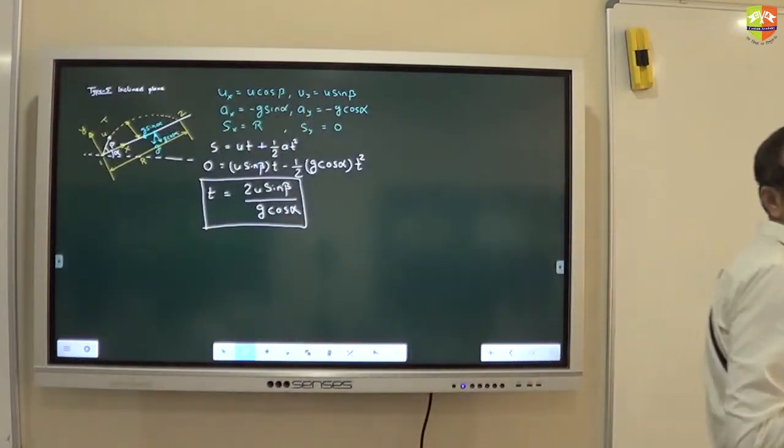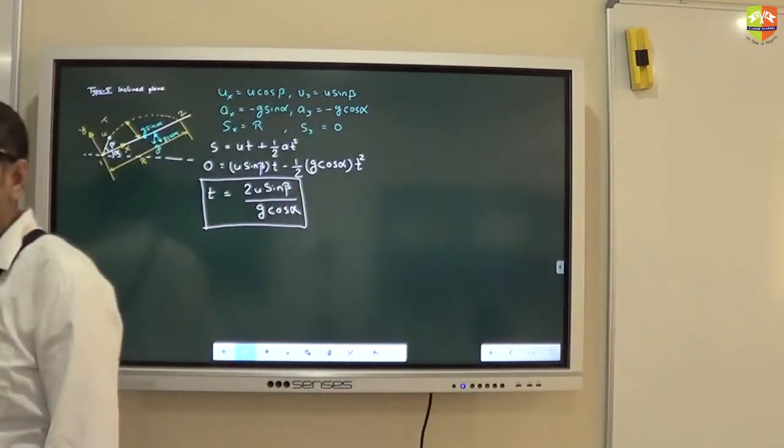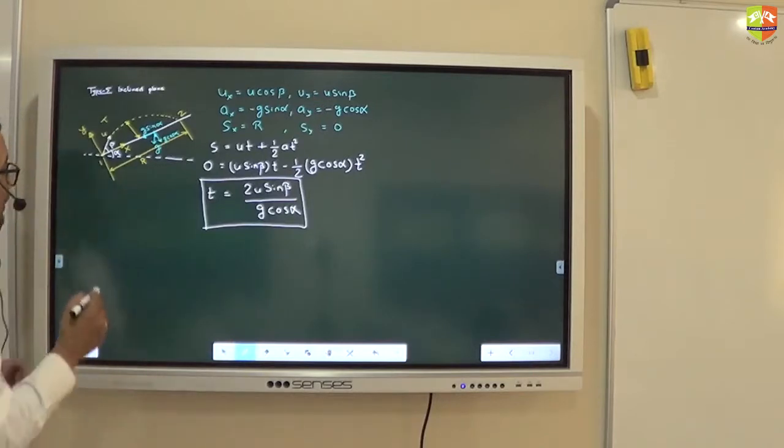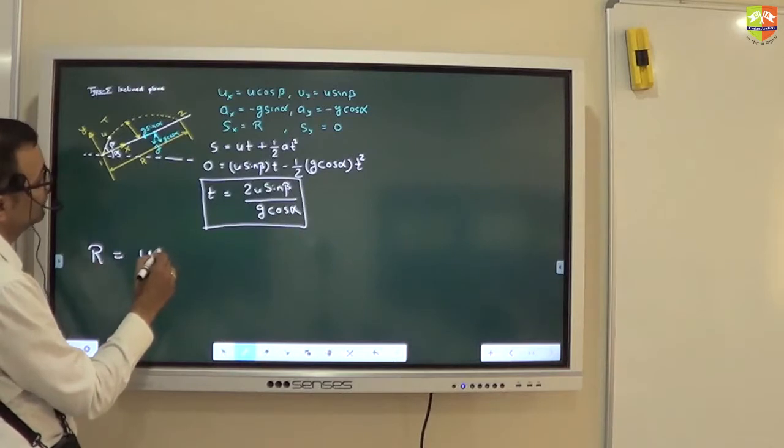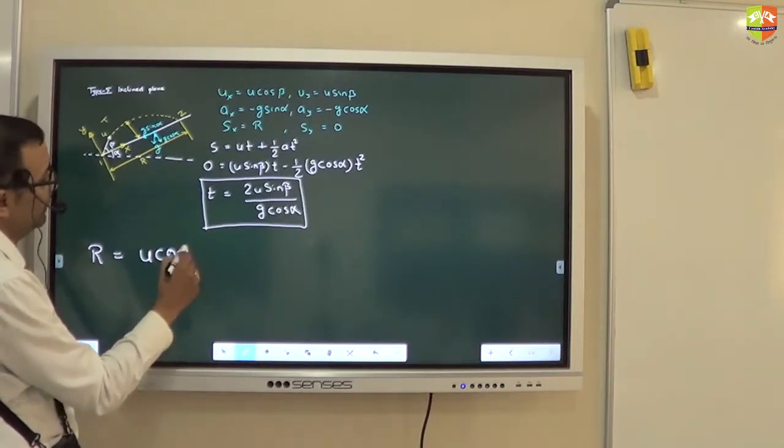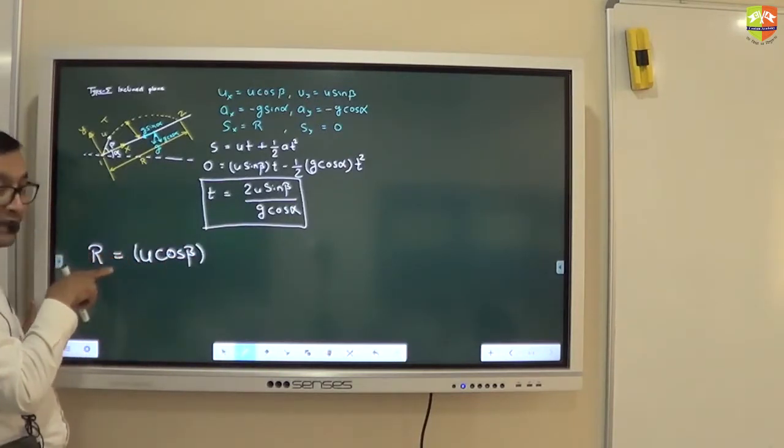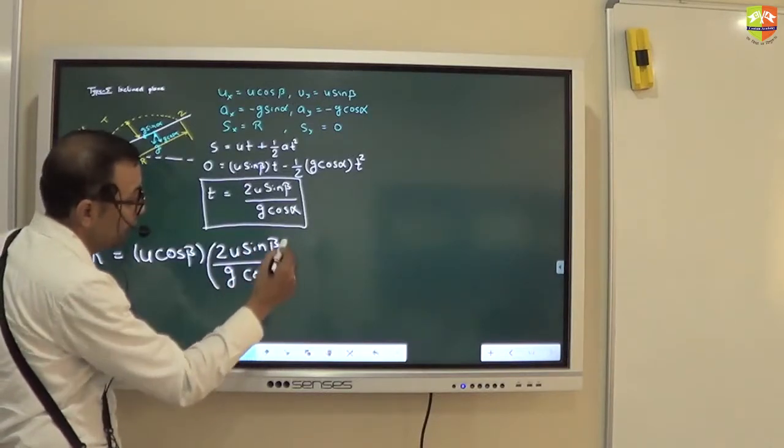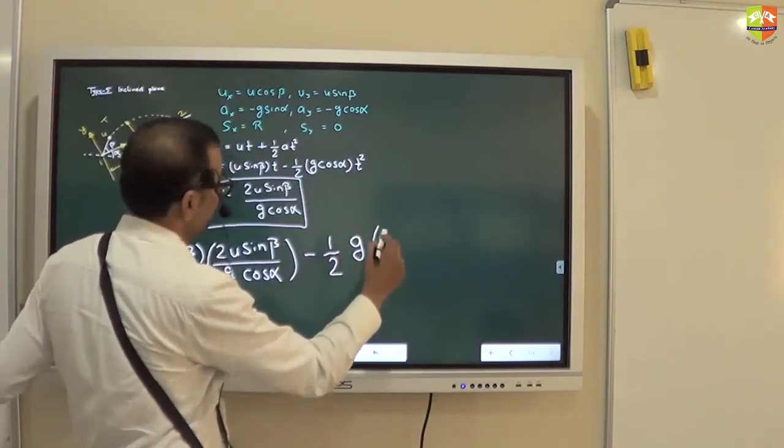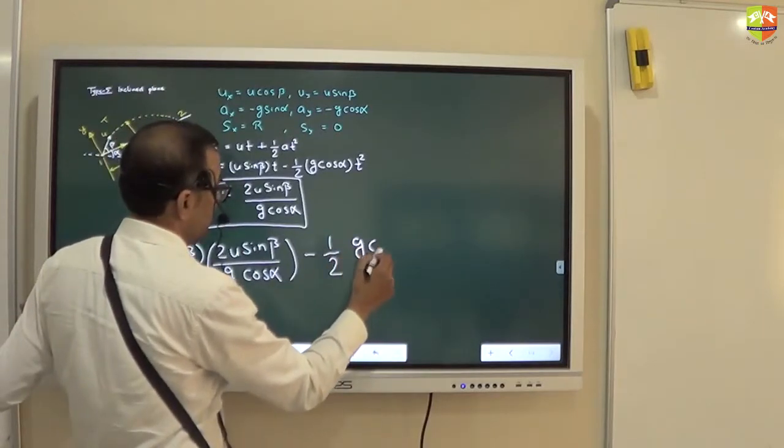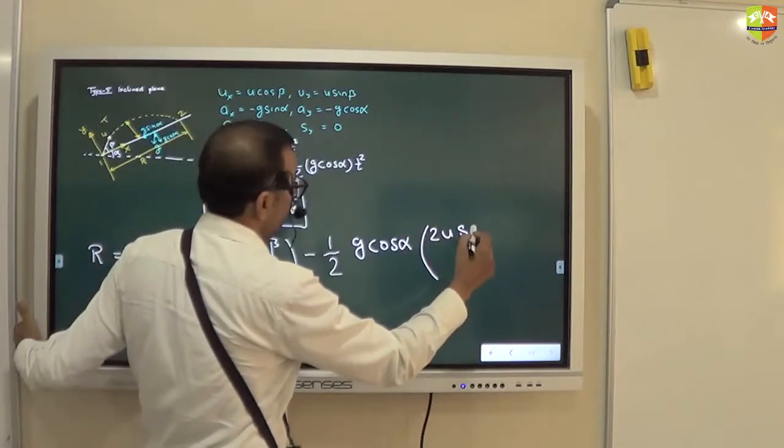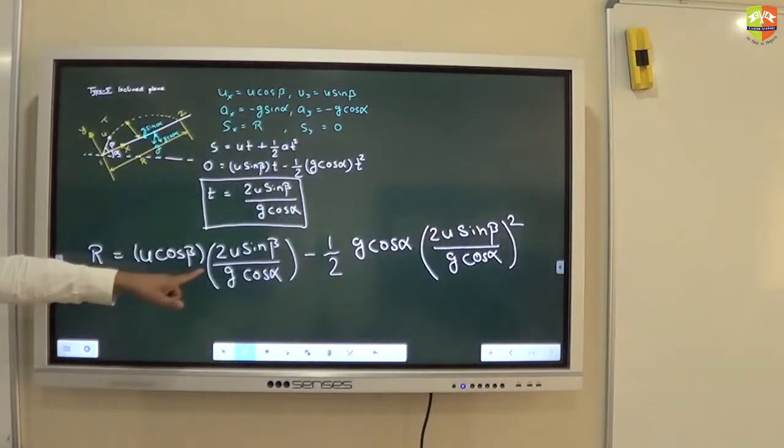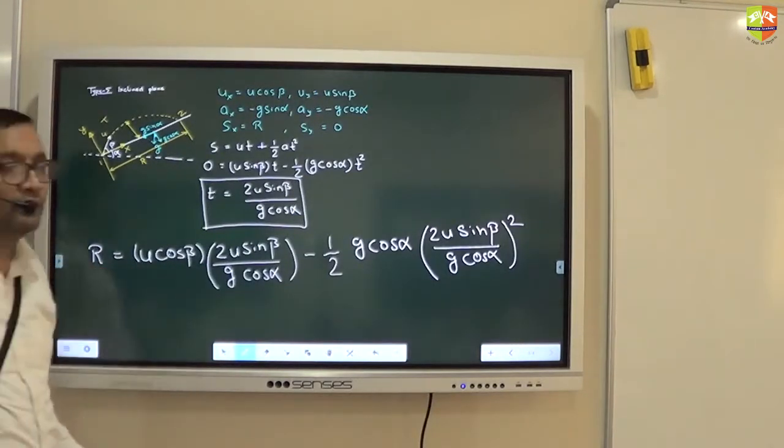Now, how to find range? I will use s equal to ut plus half at squared along X axis. You substitute t in that. So R = u cos beta into t, which is 2u sin beta by g cos alpha, minus half g sin alpha into t squared. Anybody simplify this? What is the final expression you get?